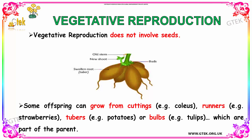Let us see about Vegetative Reproduction. Vegetative reproduction does not involve seeds. Some offspring can grow from cuttings. For example, coleus, runners for strawberries, and tubers in potatoes.